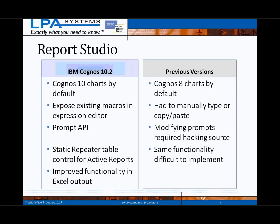Turning to some of the new features of Report Studio: the Cognos 10 charting engine is now active by default, where prior versions defaulted to using the legacy chart engine. A macros tab has been added in the expression editor to more easily include macros that previously had to be manually typed, copied, or pasted in. A new prompt API has been developed to help improve on old methods of modifying prompts by hacking the source code. A new static repeater table has been added to the active report toolbox with integrated actions and controls that were previously fairly difficult to implement. There are also nice improvements around Excel output capabilities.